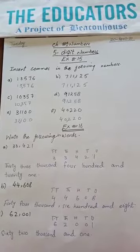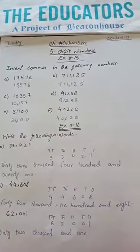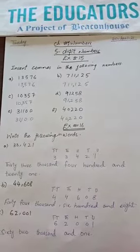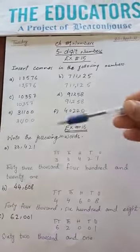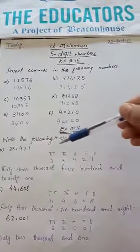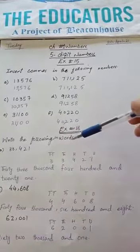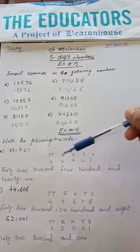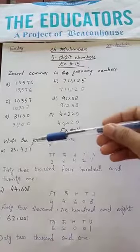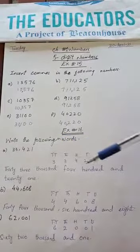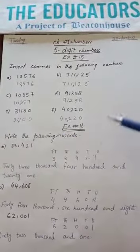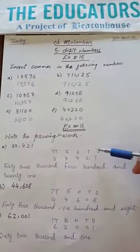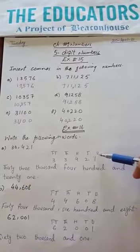Well students, the next exercise is exercise 16: write the following in words. These are the numbers, and we have to write these numbers in words. First of all, we will write the place value on these numbers.